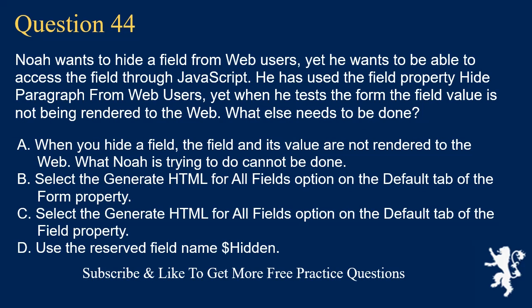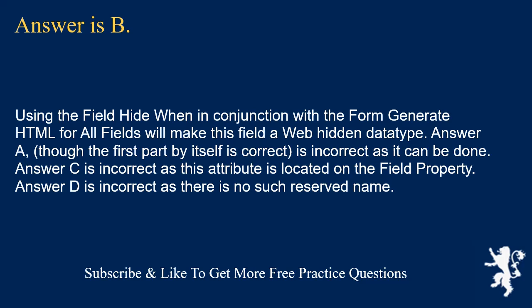Question 44. Noah wants to hide a field from web users yet be able to access the field through JavaScript. He used the field property hide paragraph from web users, but when he tests the form, the field value is not being rendered to the web. What else needs to be done? When you hide a field, the field and its value are not rendered to the web. Select the generate HTML for all fields option on the default tab of the form properties. Answer is B. Using the field hide when in conjunction with the form's generate HTML for all fields option will make this field a web hidden data type. Answer A is incorrect because though the first part is correct, it can be done. Answer C is incorrect as this attribute is on the field property. Answer D is incorrect as there is no such reserved name.